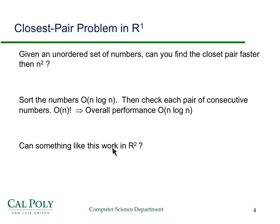Now the question is, can you think of something that might work like this for R squared? So again, I'd pause. Can you come up with a divide and conquer approach that might do this and use the fact that you can potentially sort the points in some way?